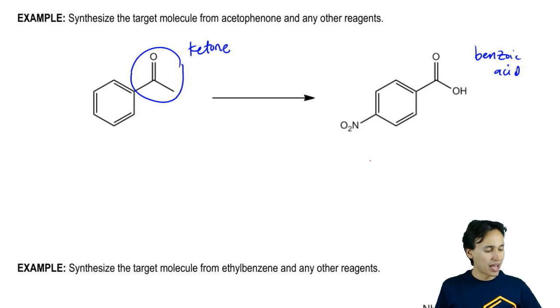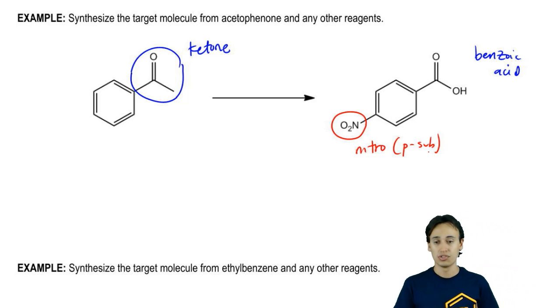I've also got to add a nitro group in the para position, so that's para substitution. There's kind of a lot going on here. I've got a few different things.